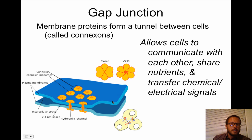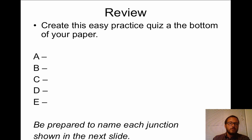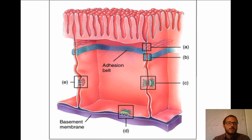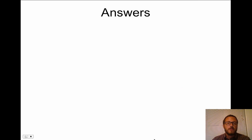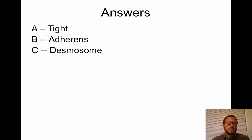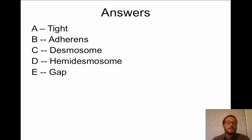Let's do a quick review. A picture of a cell shows five labeled junctions — A, B, C, D, and E — so pause and write down your answers. The answers: A is a tight junction, B is an adherens junction, C is a desmosome, D is a hemidesmosome, and E is a gap junction.